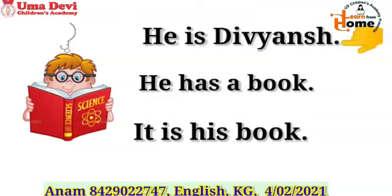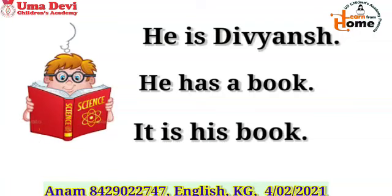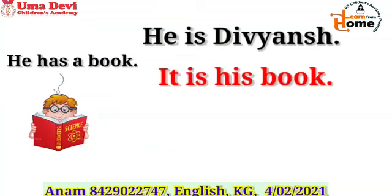Look at the screen. Read this sentence: 'He is Divyans. He has a book. It is his book.' Tell me, what does Divyans have? Book. Very good. Whose book is this? Divyans. So in place of Divyans, you will use 'his.' It is his book.